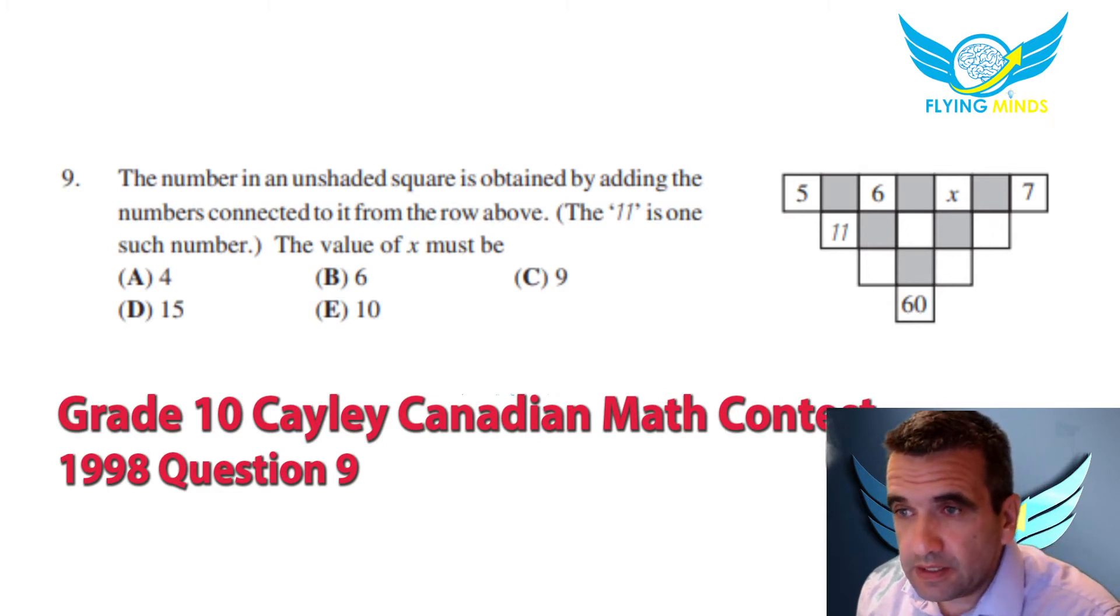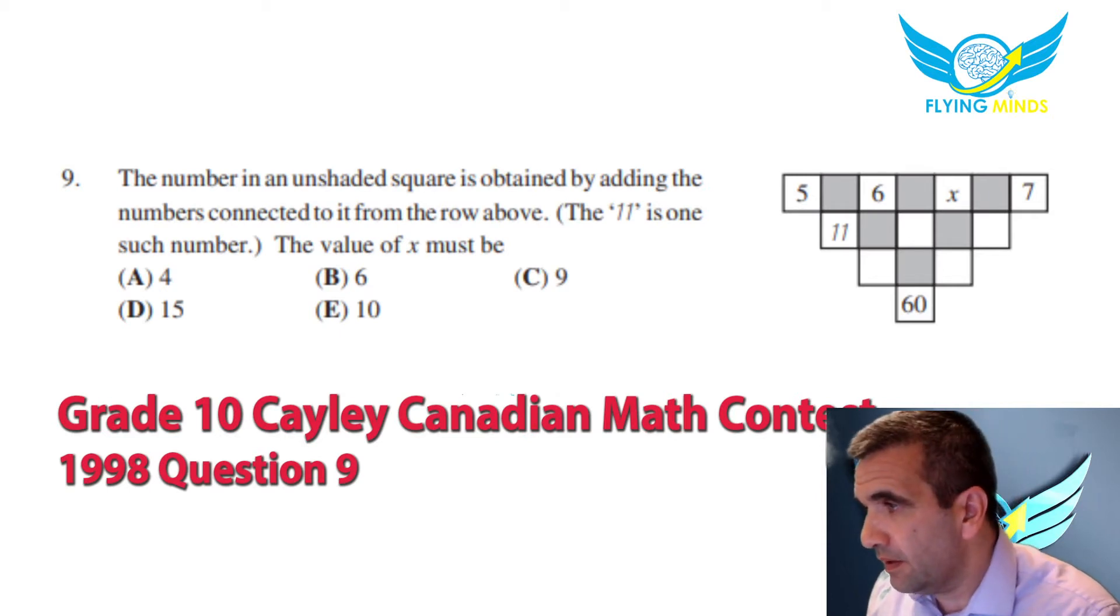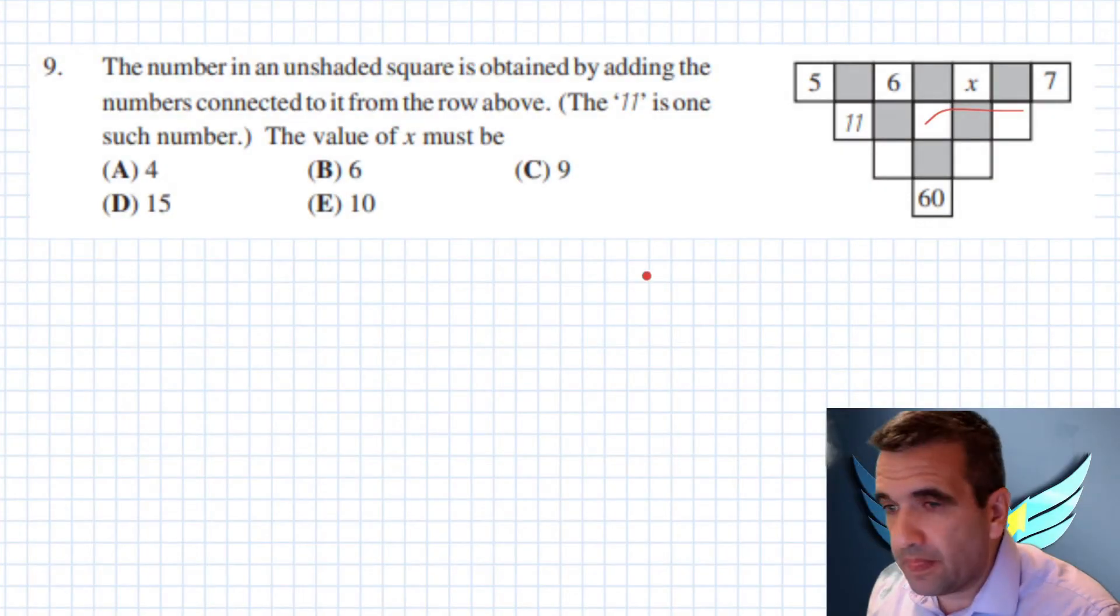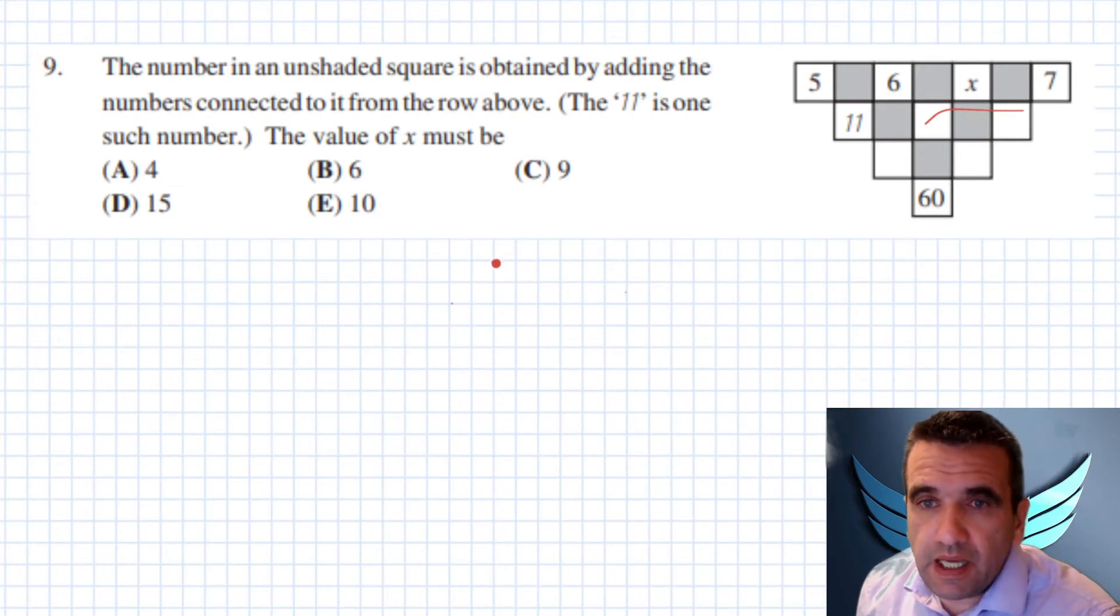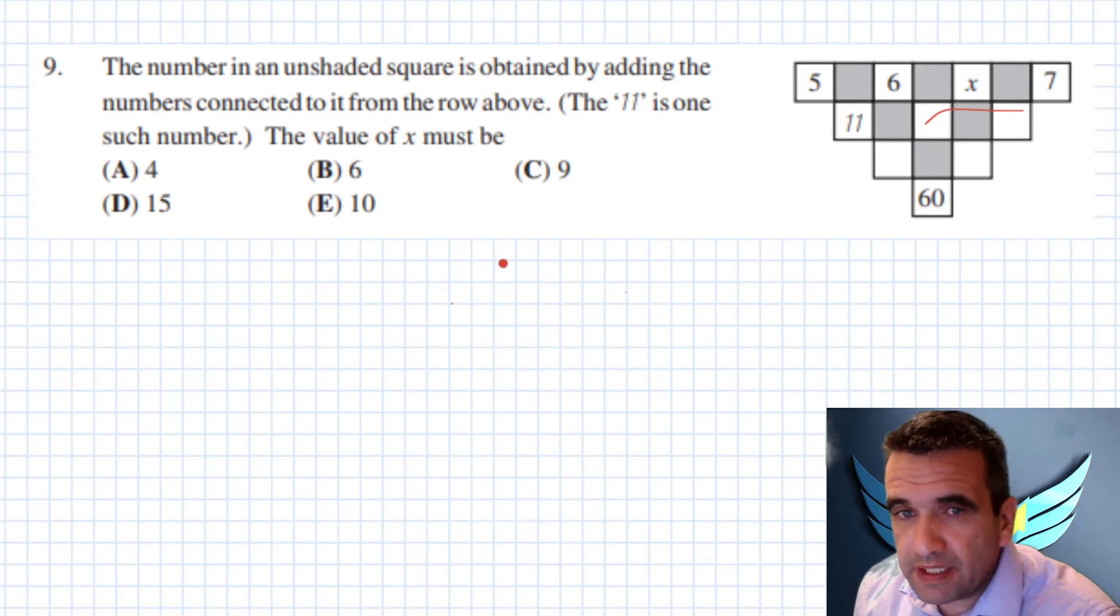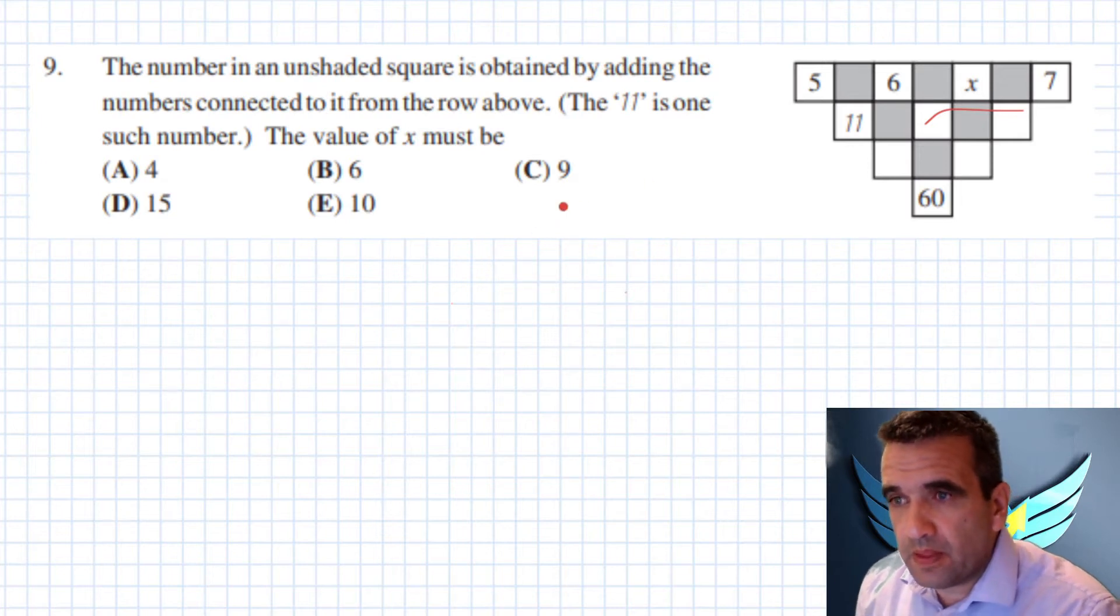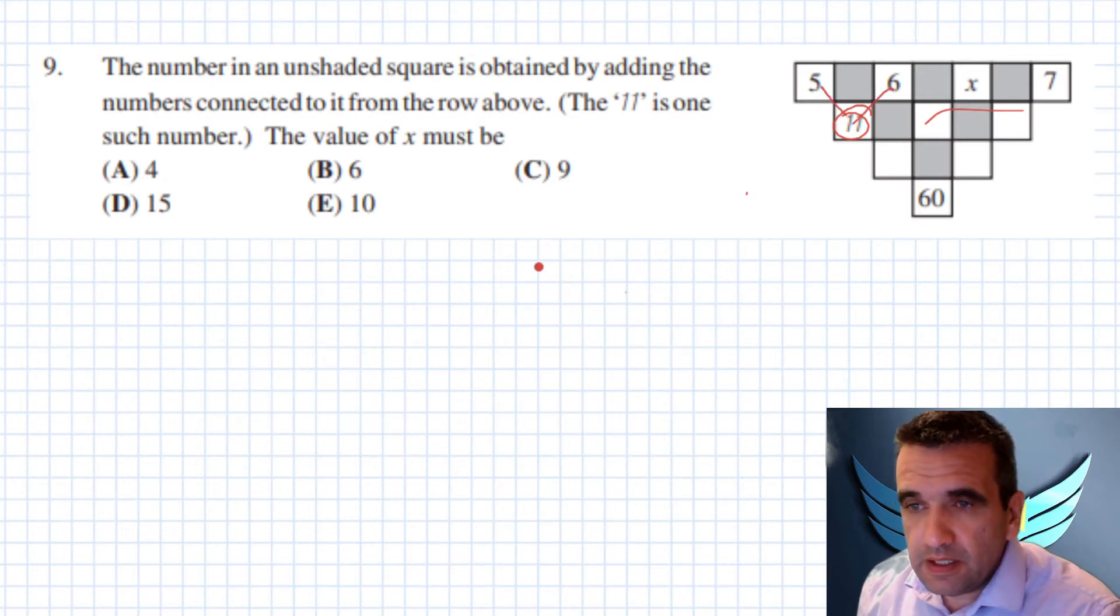Ok, so the number in an unshaded square is obtained by adding the numbers connected to it from the row above. So 11 was formed by adding 5 and 6.